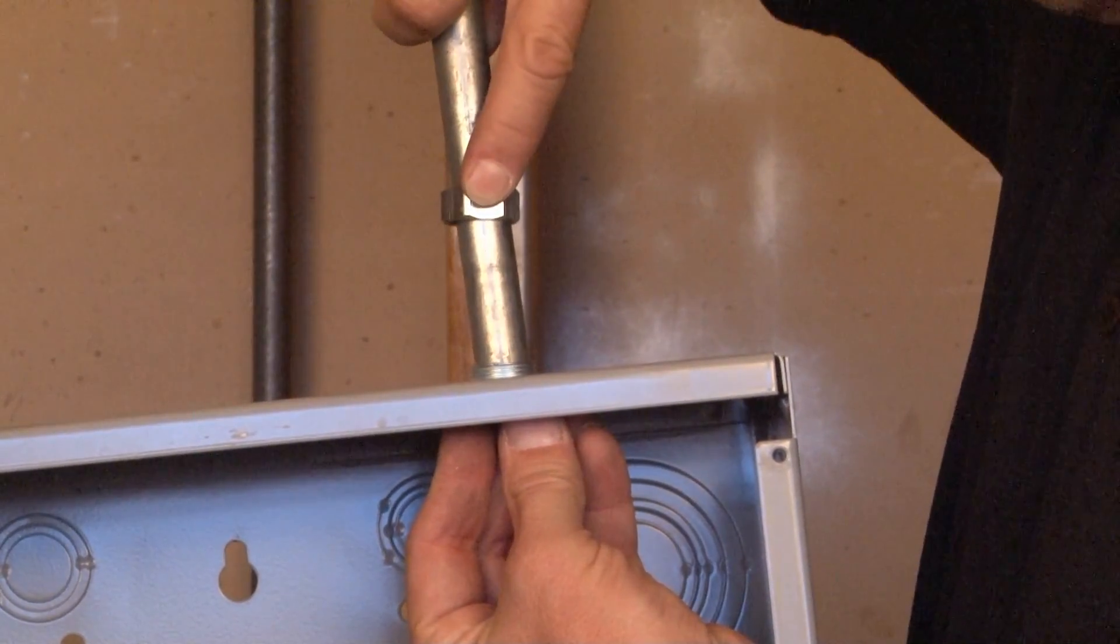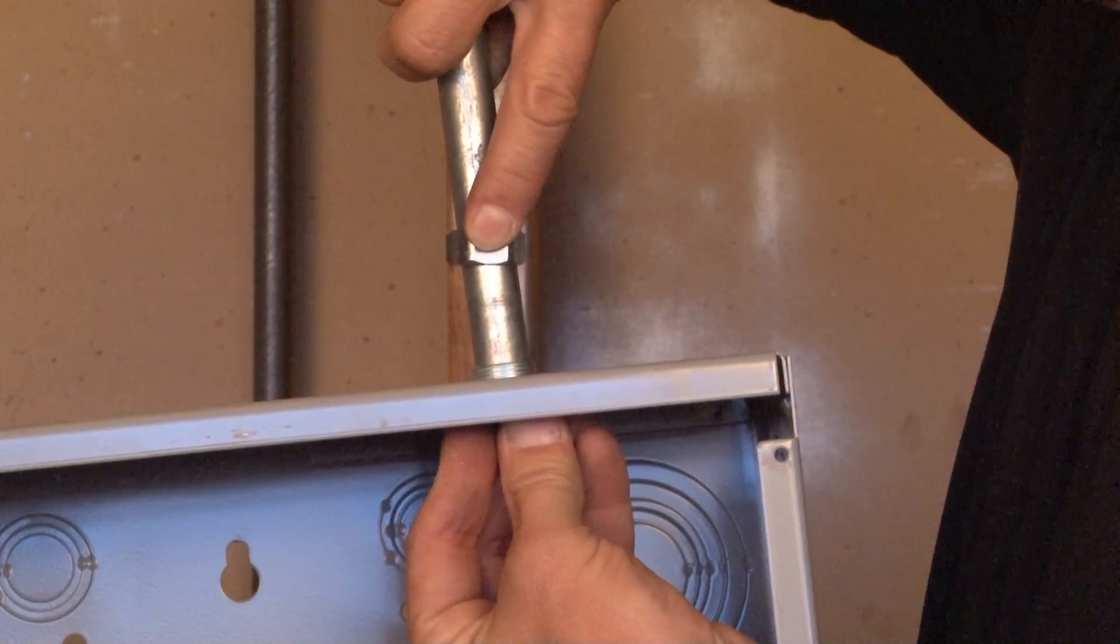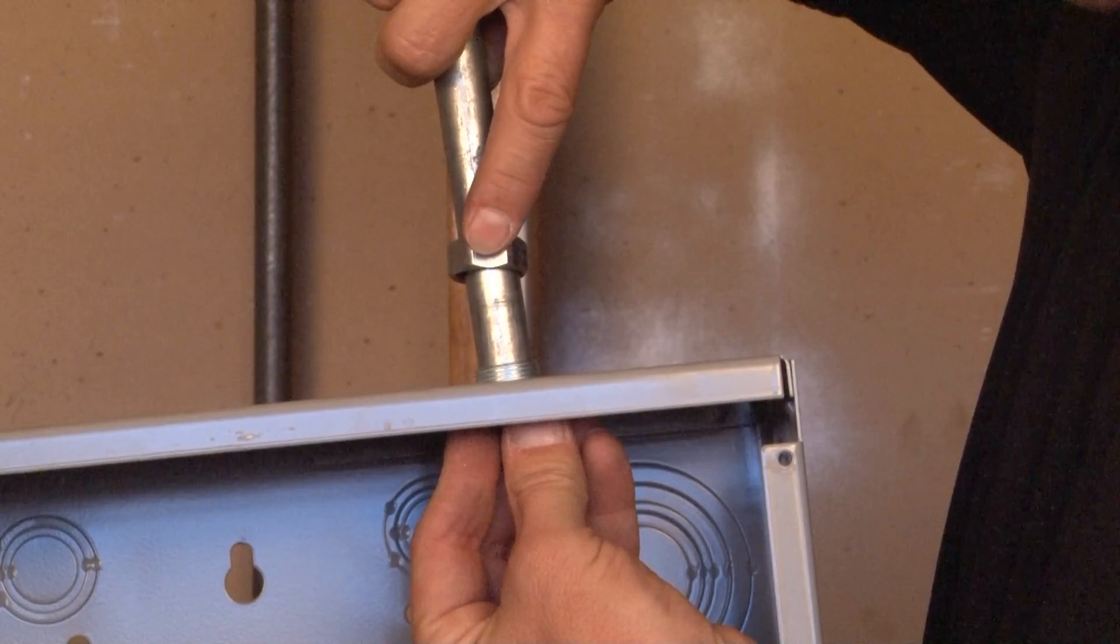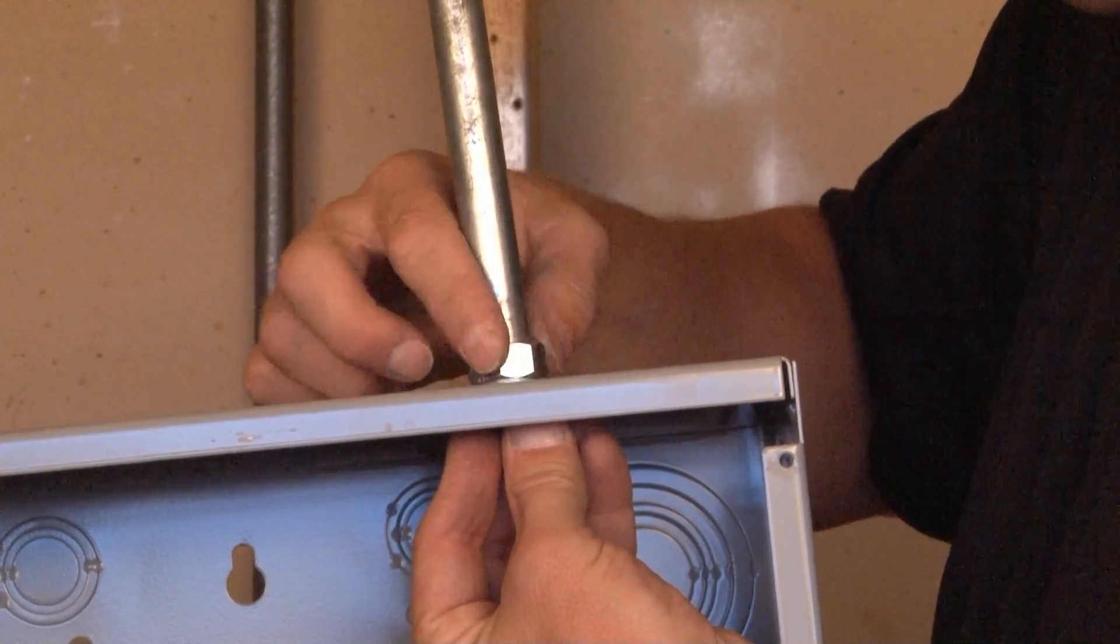At this point, you can drop in your EMT conduit until it catches on the stop. Now, drop the gland ring into place and re-attach and tighten it onto the threaded portion.